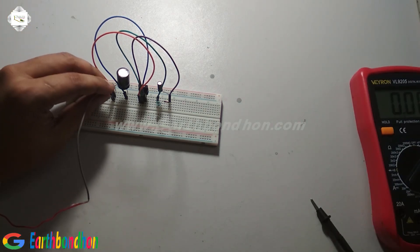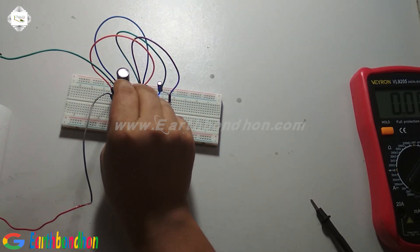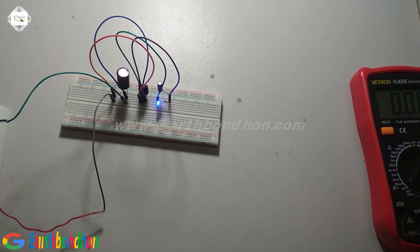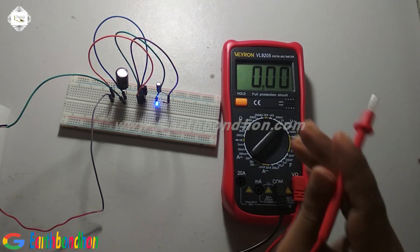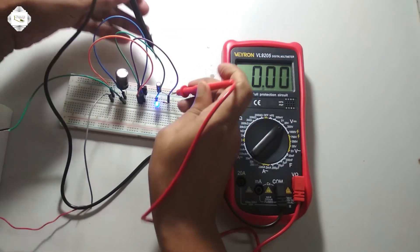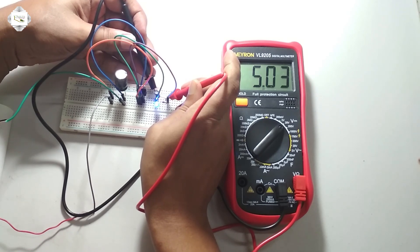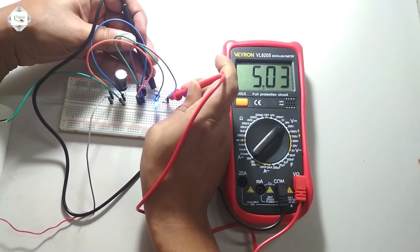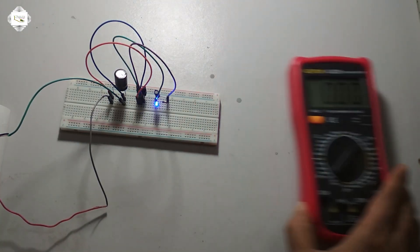Checking the input voltage, this is 9 volts and negative. Now checking the output voltage. The reading shows the output is approximately 5 volts as expected.